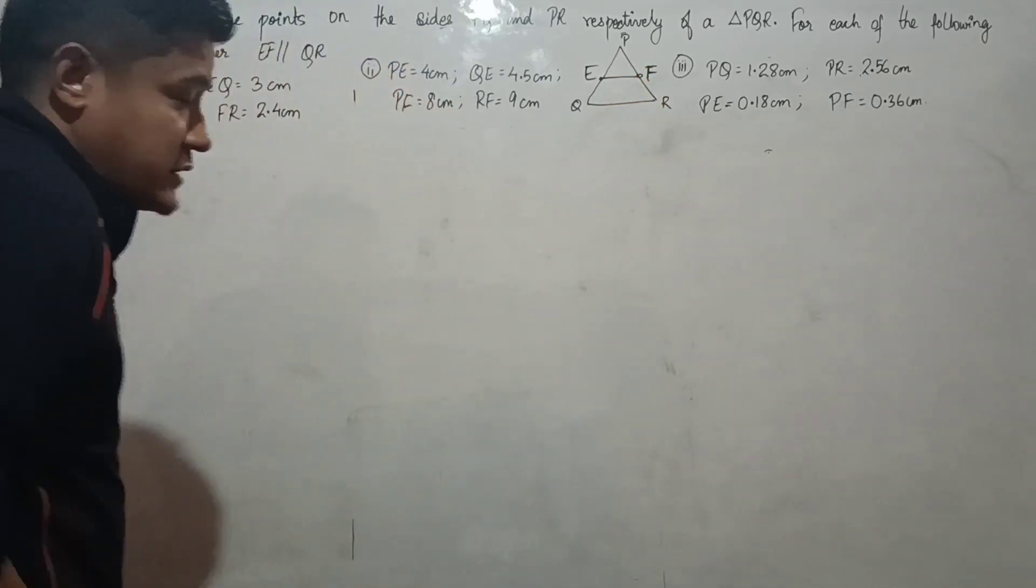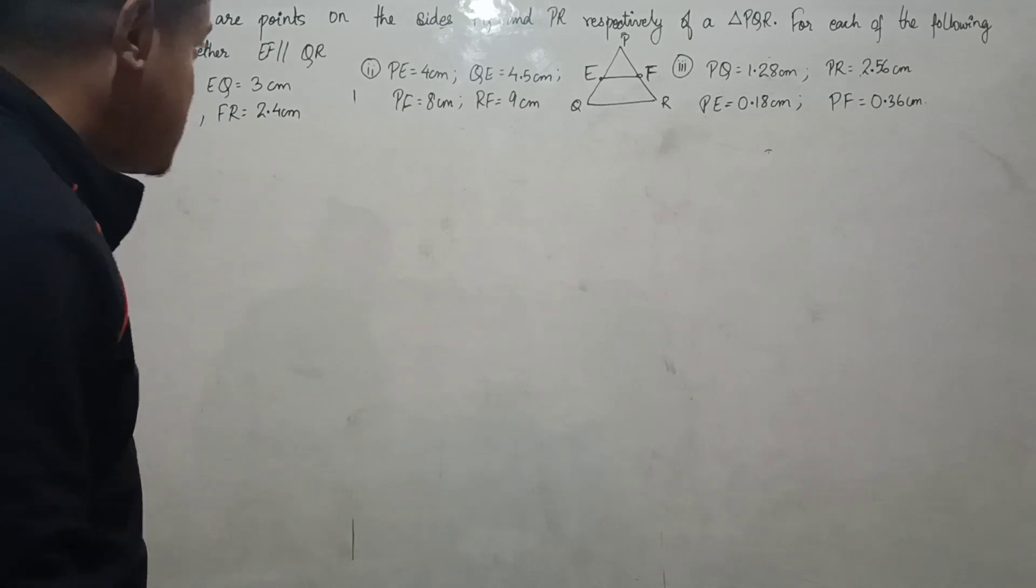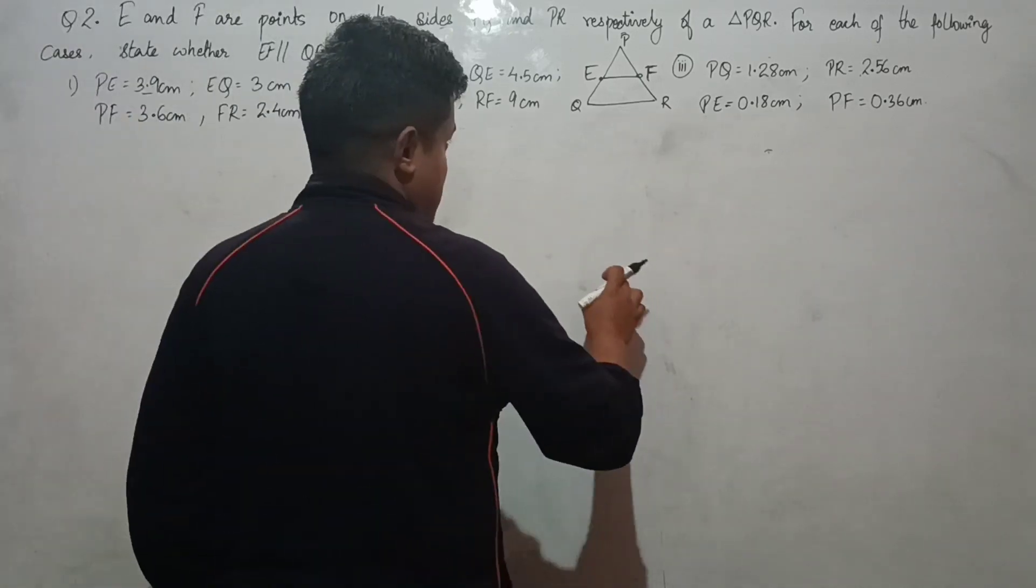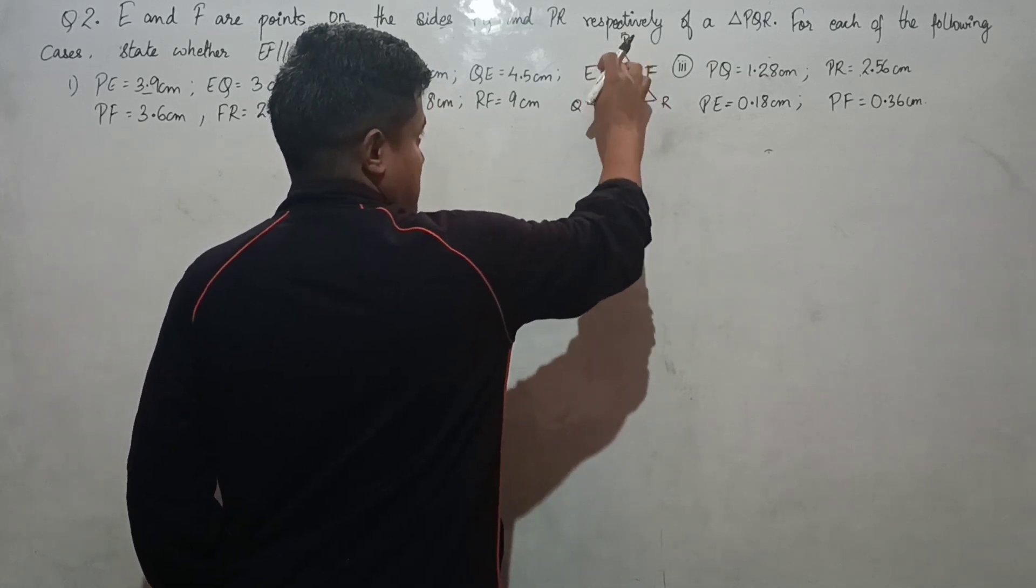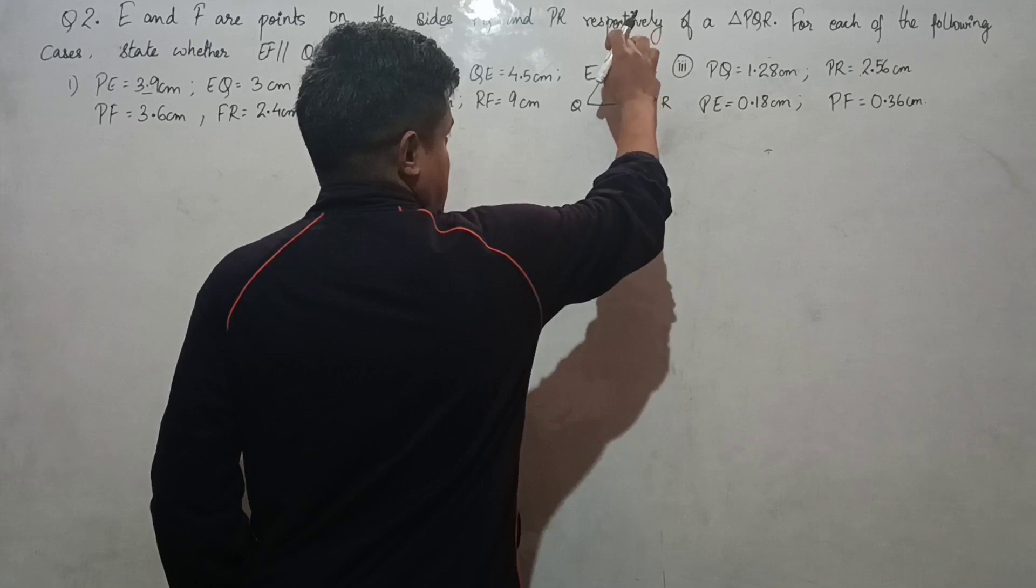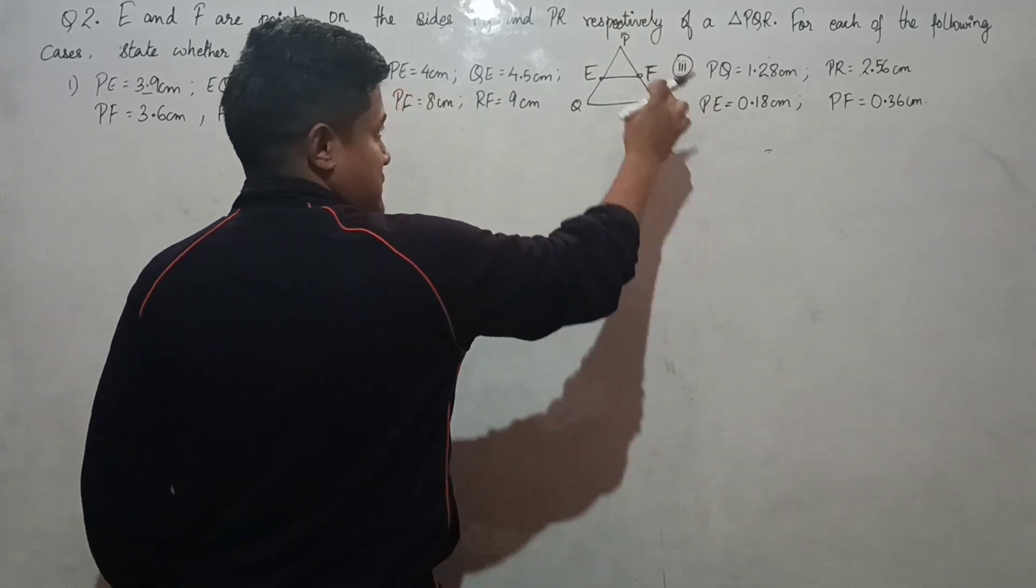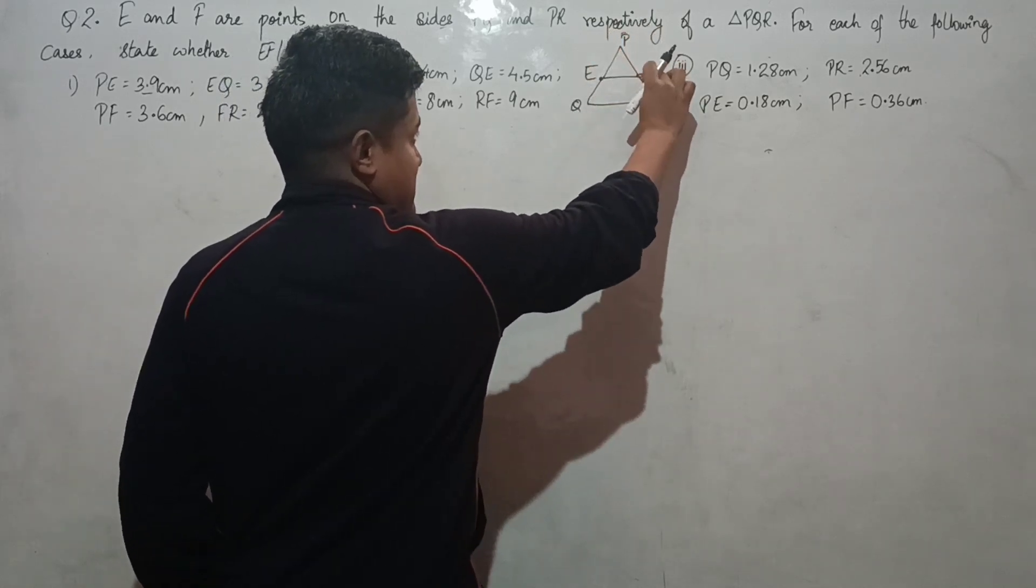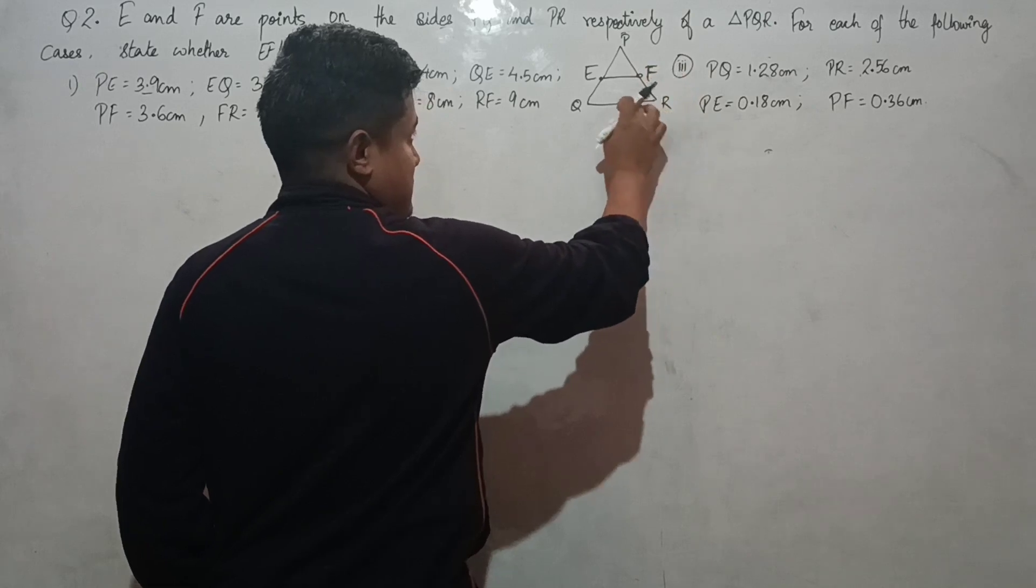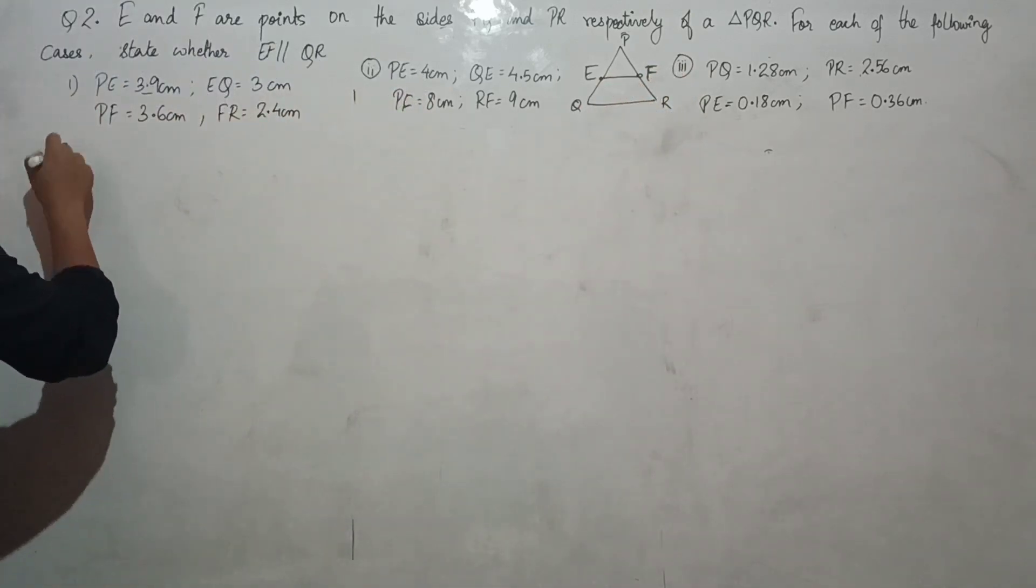We can show parallelism by using the converse of the Basic Proportionality Theorem. If the ratio PE/EQ equals PF/FR, then the lines are parallel. Conversely, if PE/EQ = PF/FR are equal, then the line is parallel.